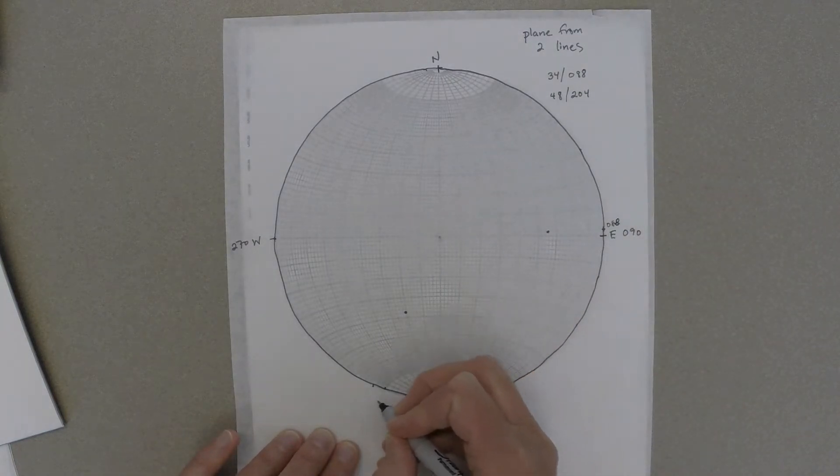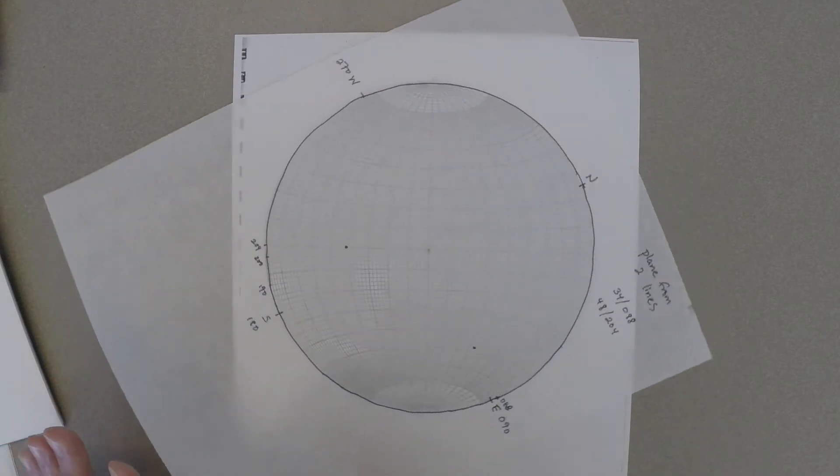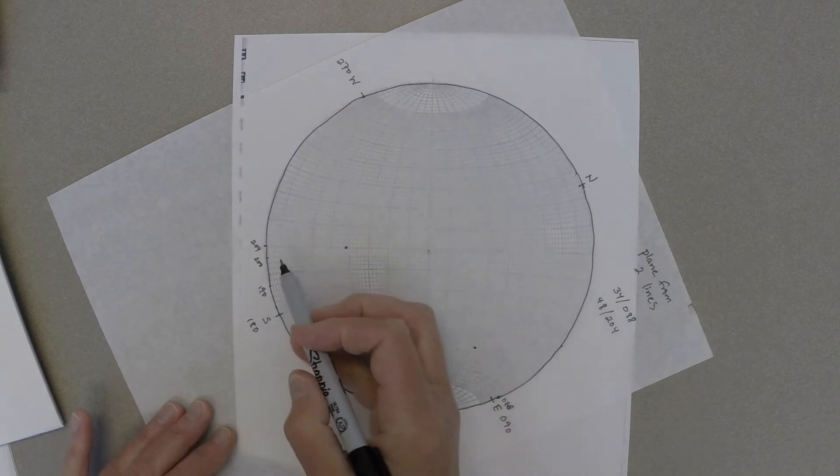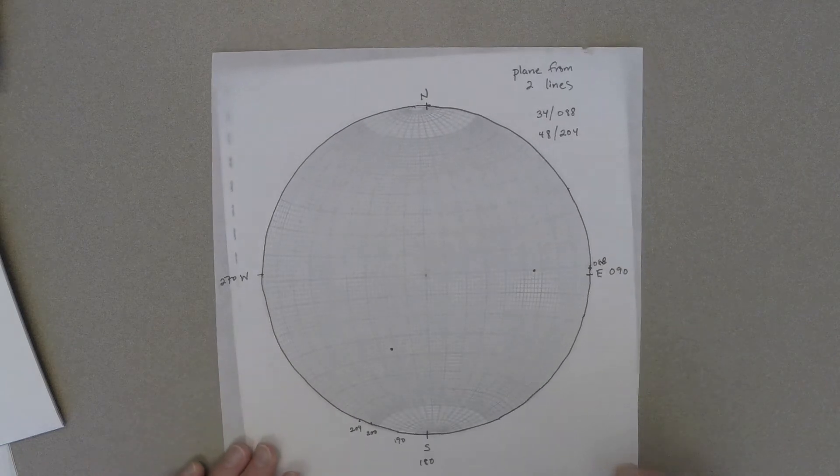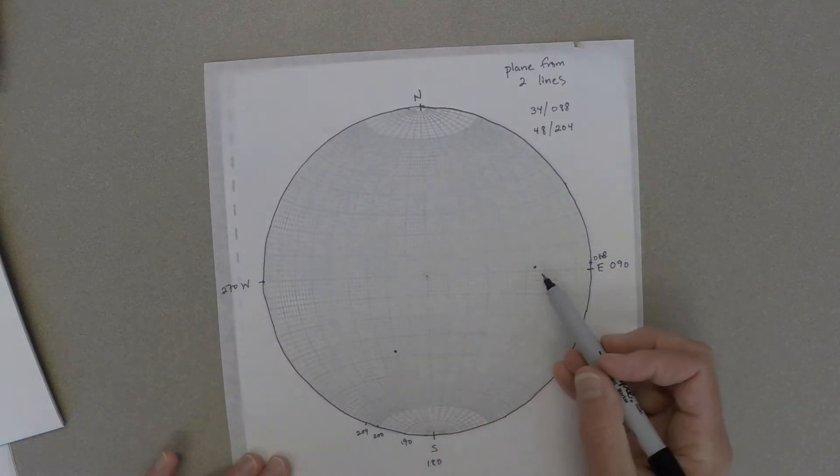The second dot should have a trend of 204 degrees, so we'll count around the outside of the circle to find that, and then count in along the equator until we get to the dot, and that's a plunge of 48 degrees.